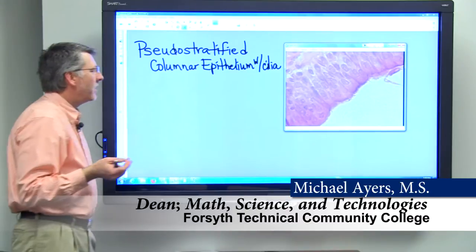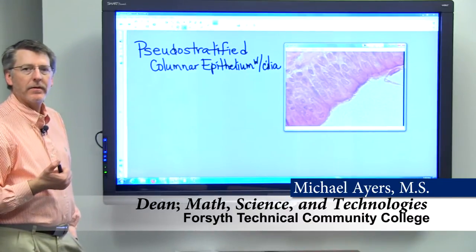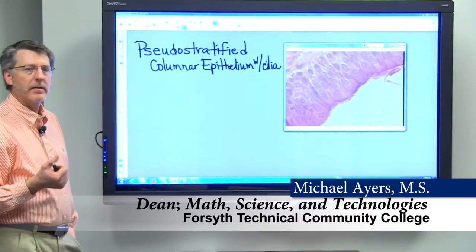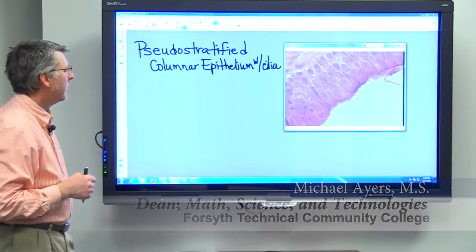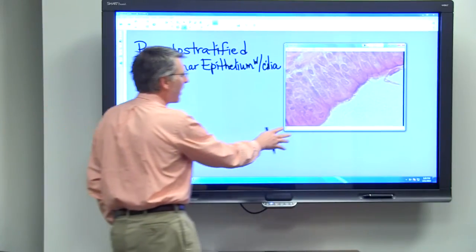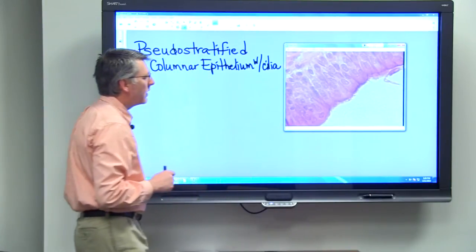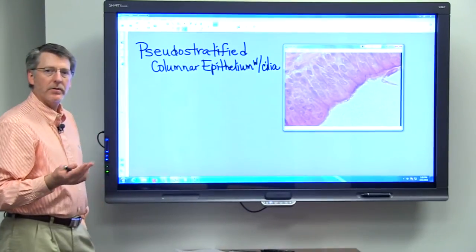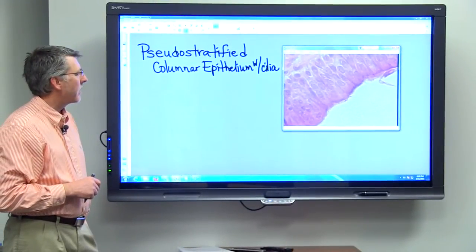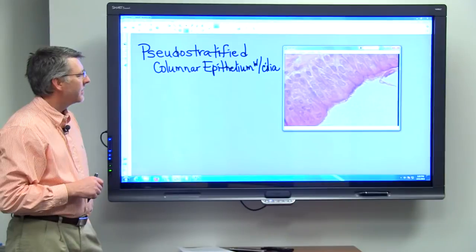Let's think about pseudostratified columnar epithelium with cilia next. I have a micrograph here of a trachea slide that shows the pseudostratified columnar epithelial tissue.